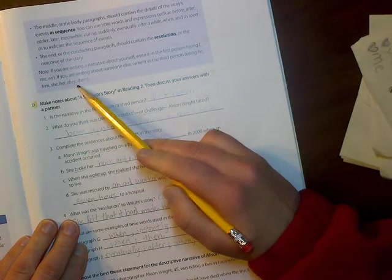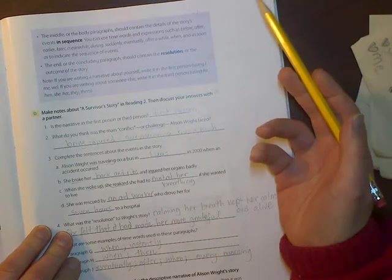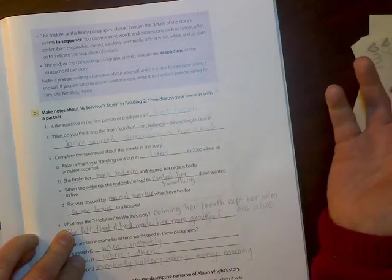To do this you need to have read the information in these boxes. We're going to go through these in class. But here it says, if you're writing a narrative about yourself, write it in the first person using I or me or we. If you're writing about someone else, write it in the third person using he, him, she, her, they, or them.